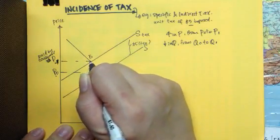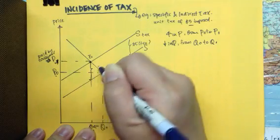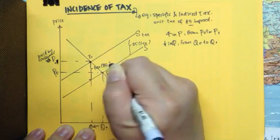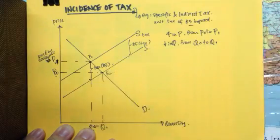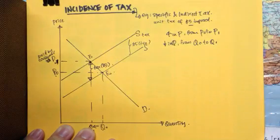And as such, at this equilibrium point, which means to say that this is the vertical distance, so this will be the tax of the $5 that we mentioned earlier on, will be given to the government. So this amount will be given to the government.